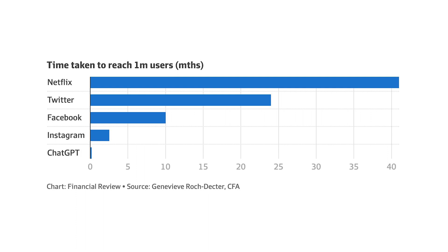Just for comparison, it took Instagram two and a half months to reach their 1 million users, and Facebook, Twitter, and Netflix even longer. ChatGPT generates answers to various questions, writes articles, drafts emails, and even programming code, fixes mistakes in existing code, and so much more.